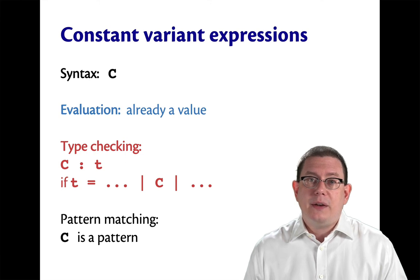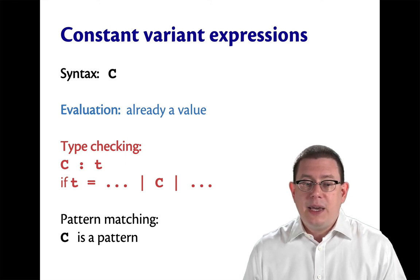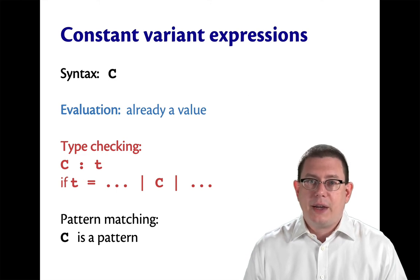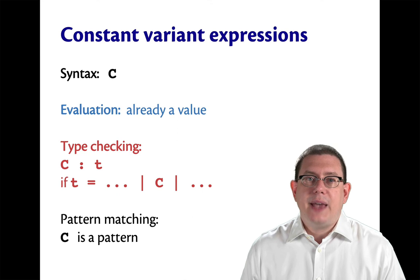And for type checking, a constructor name has type T if there is a definition of variant type T that includes that constructor name. Finally, C is a pattern.